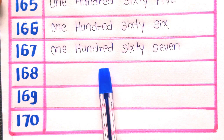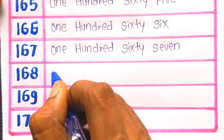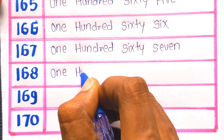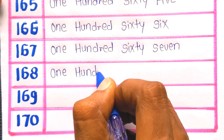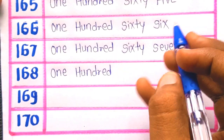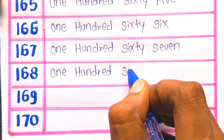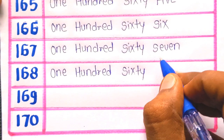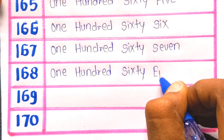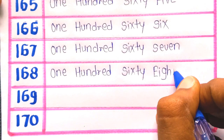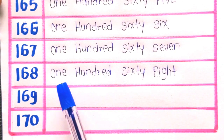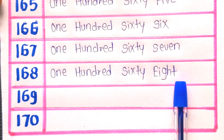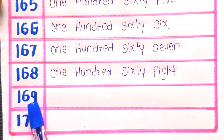Next number is 168: O-N-E, ONE, H-U-N-D-R-E-D, HUNDRED, S-I-X-T-Y, SIXTY, E-I-G-H-T, EIGHT. 168.